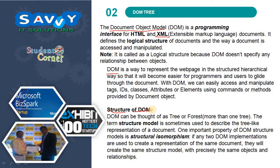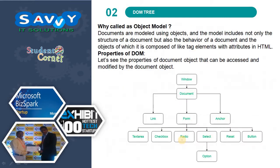The structure of the DOM can be thought of as a tree or forest. The term Structure Model is sometimes used to describe the tree-like representation of a document. One important property of the DOM Structure Model is Structural Isomorphism — if any two DOM implementations are used to create a representation of the same document, they will create the same structure model with precisely the same objects and relationships. Documents are modeled using objects, and the model includes not only the structure of the document but also the behavior of the document and the objects of which it is composed, like tag elements with attributes in HTML.